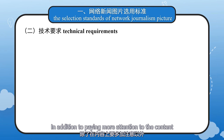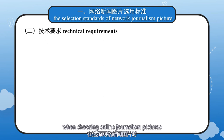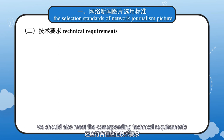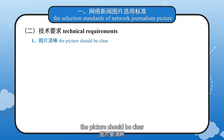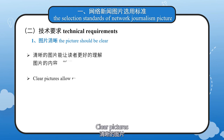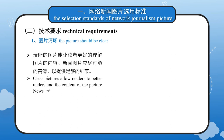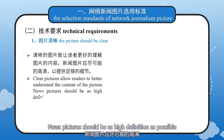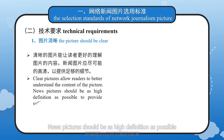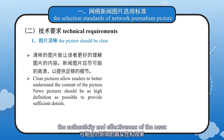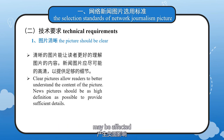In addition to paying more attention to the content, when choosing online journalism pictures, we should also meet the corresponding technical requirements. First of all, the pictures should be clear. Clear pictures allow readers to better understand the content. News pictures should be as high definition as possible to provide sufficient details. If the picture quality is low, the authenticity and effectiveness of the news may be affected.